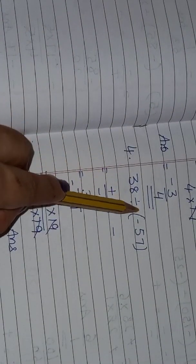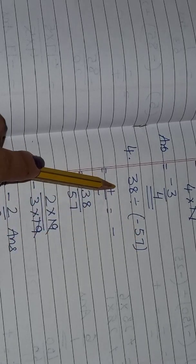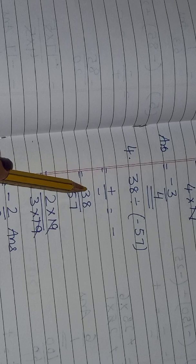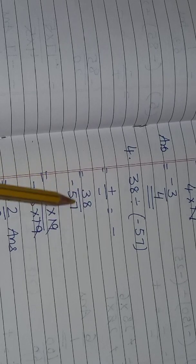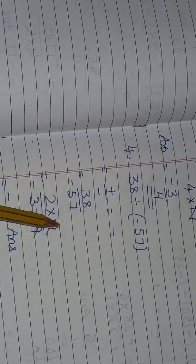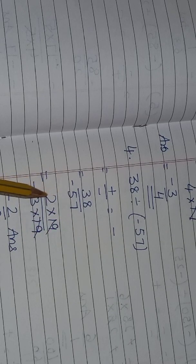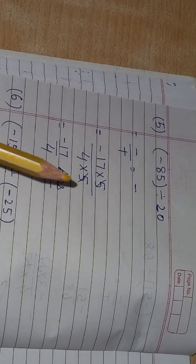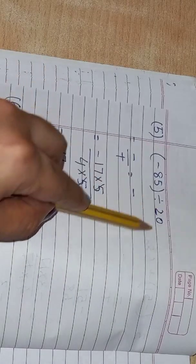Fourth question: 38 divided by minus 57. Plus divided by minus is equal to minus. 19 is the main table: 2 × 19 are 38, 3 × 19 are 57. Cancel the 19s — you get 2 upon 3. It is not reducible further, so write down minus 2 upon 3.